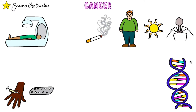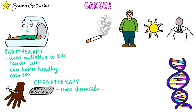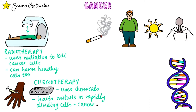The two main methods of treating cancer are radiotherapy and chemotherapy. You don't need to know the details of these, so we'll just look at this very briefly. Radiotherapy uses radiation to target and kill cancer cells, but it can harm healthy cells too. Chemotherapy uses chemicals, which can be taken either through tablets or through a vein in the hand or arm. These chemicals work by halting mitosis in rapidly dividing cells, i.e. cancer cells.